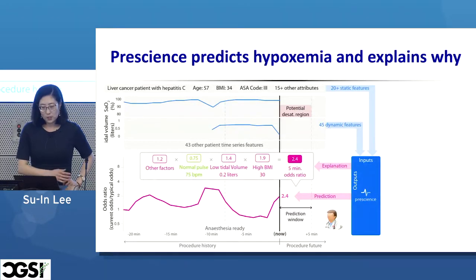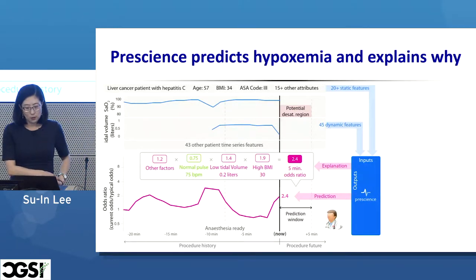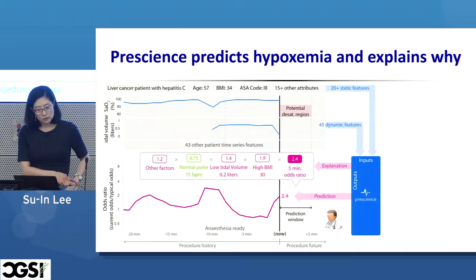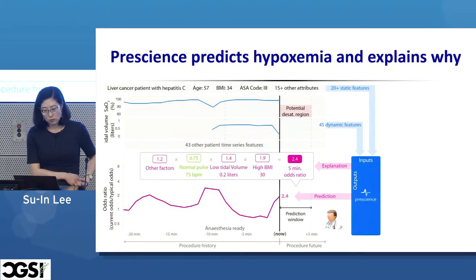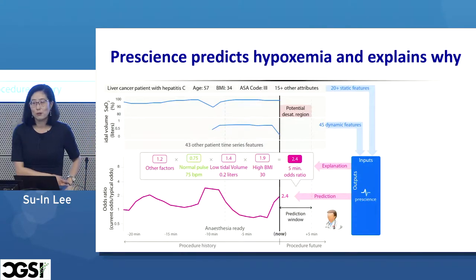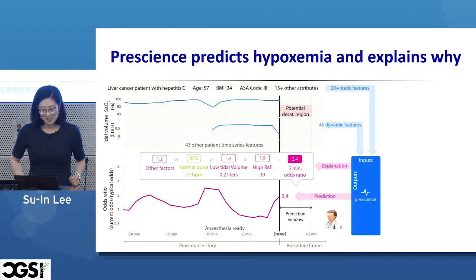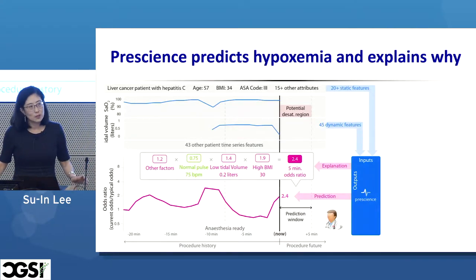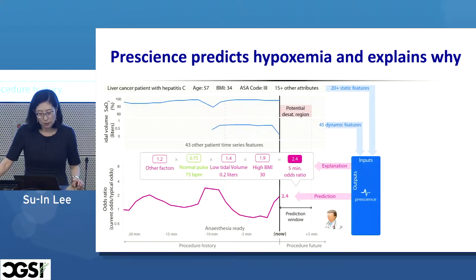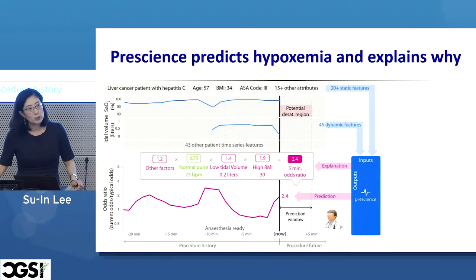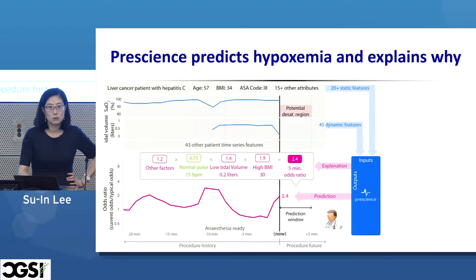Its key feature is the ability to explain why a certain prediction was made. In this example, it shows that the risk is due to the patient's BMI — which is not modifiable during surgery — current tidal volume, the amount of air exhaled per breath, and purge rate. These explanations can be clinically meaningful because some of these factors may be modifiable and could result in clinical changes to mitigate the risk. To build this model, we first needed training data.